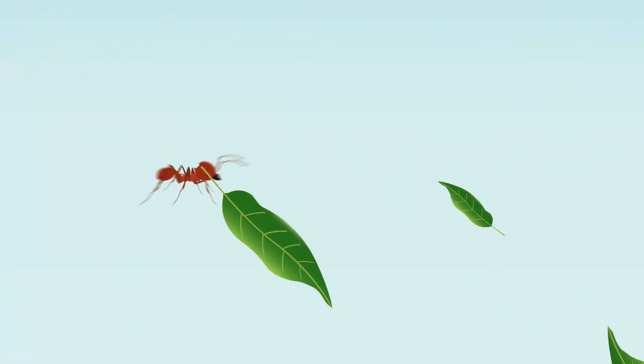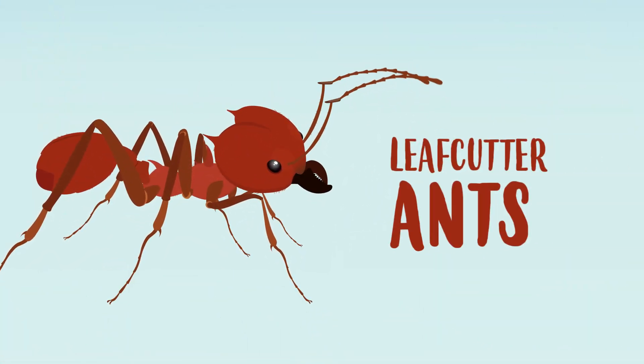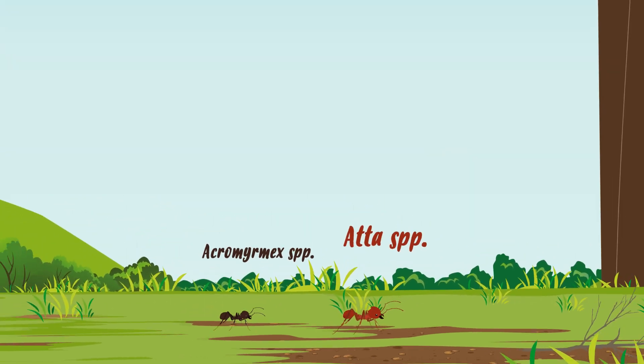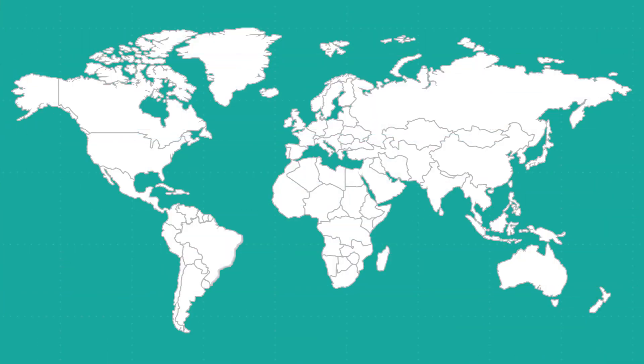The main pests attacking these forests are leafcutter ants. There are two types of leafcutter ants that cause the most damage. They belong to genus ata and acromarmex. They are found only in the Americas.